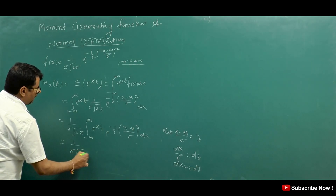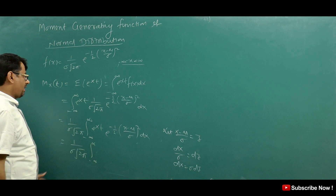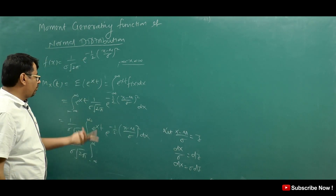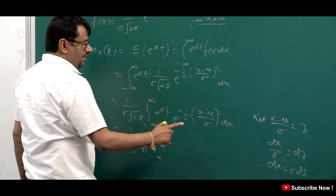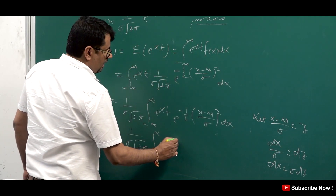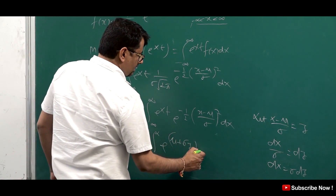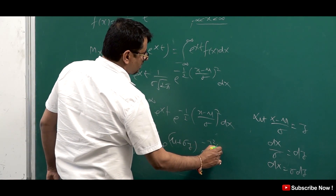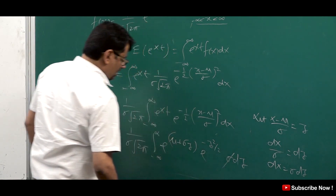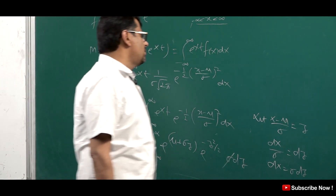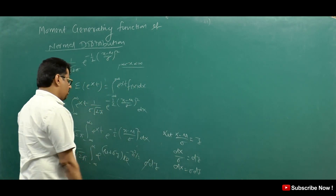After substitution, we have 1 upon sigma root 2 pi times the integral. x becomes mu plus sigma z, and the exponent e to the power minus z squared by 2 appears, multiplied by sigma dz. The sigma terms cancel, simplifying the expression.